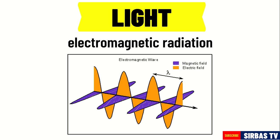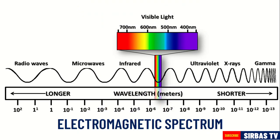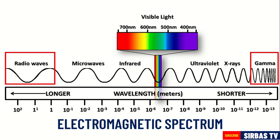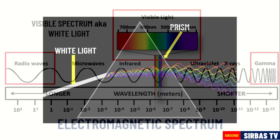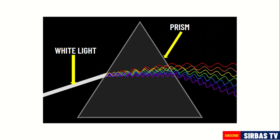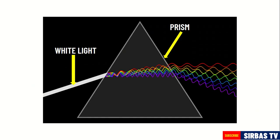The electromagnetic spectrum is where electromagnetic waves are arranged in increasing frequency. In the illustration, which wave has the lowest frequency? How about the wave that has the highest frequency? As can be seen in the illustration, radio waves have the lowest frequency and gamma rays have the highest frequency. The only frequency of electromagnetic waves visible to the human eye is called the visible light spectrum, also known as white light.